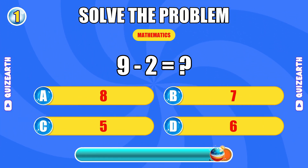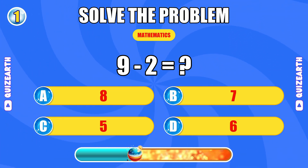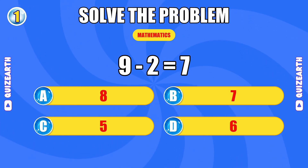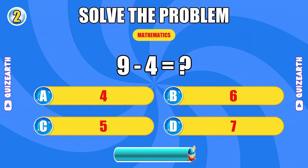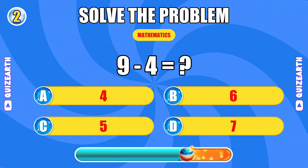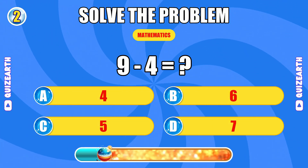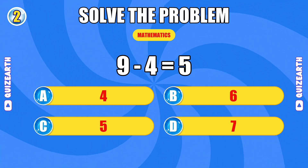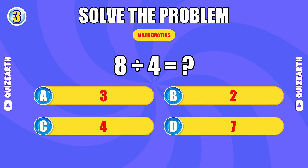What's nine minus two? Perfect — the answer is seven. What do you get when you subtract four from nine? Brilliant start — the answer is five. How much is eight divided by four?